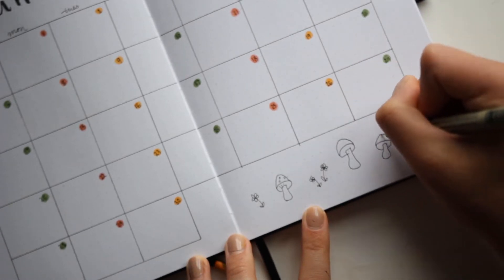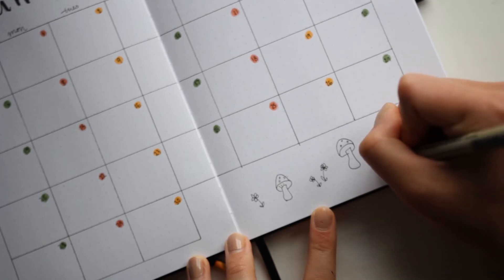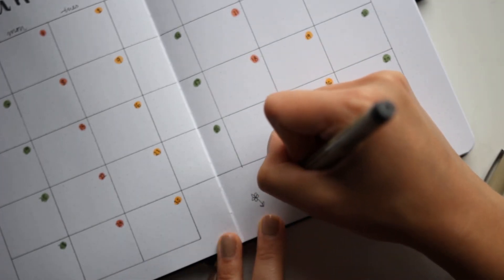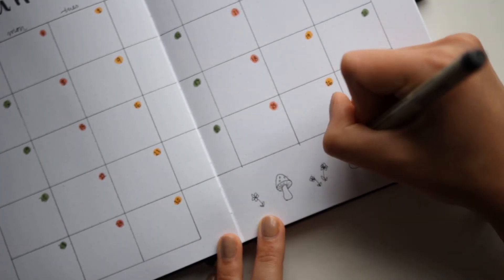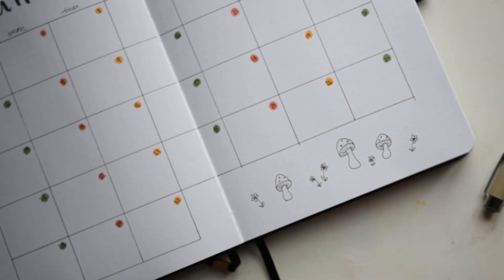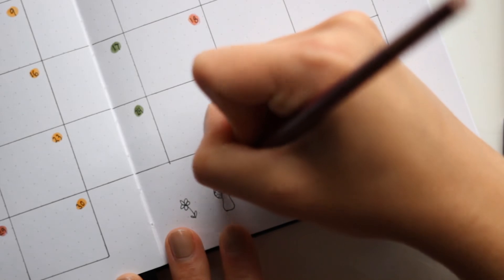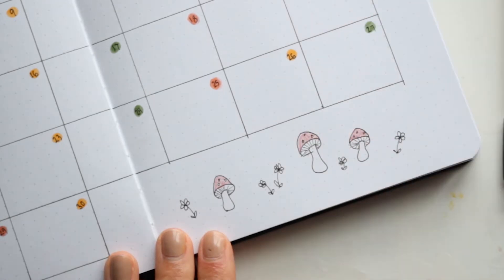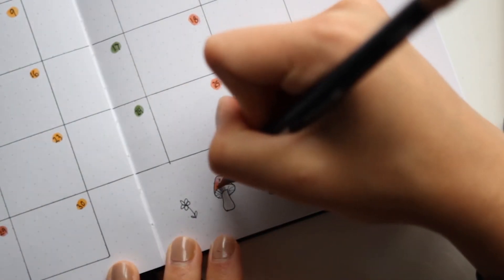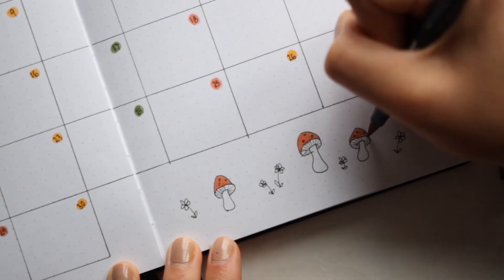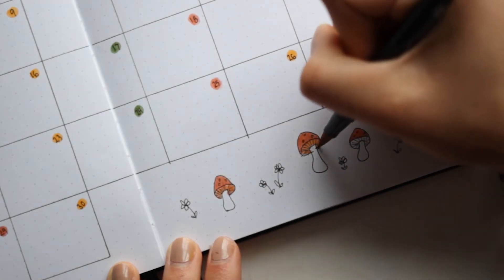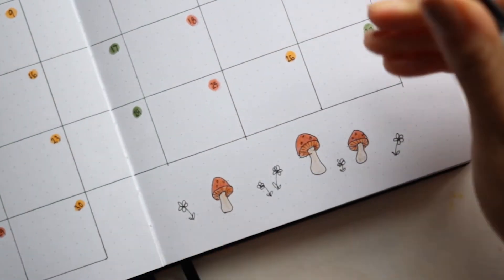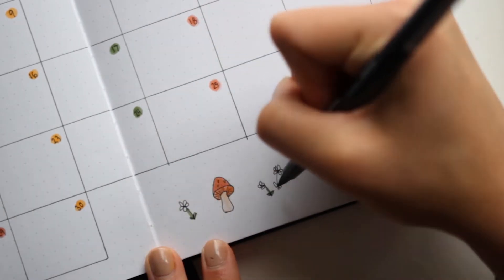I always have this issue of what to do with all the blank space around my calendars. I've tried putting trackers there, but I don't need to track my things like that. If you ever watch Amanda Rachely, she'll put YouTube growth trackers or Instagram trackers around her calendar spread sometimes. And I'm just not interested in tracking that kind of stuff. So I always have trouble with what to fill the space with.